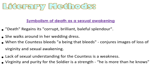The apparent symbolism of death as a sexual awakening has a huge potency across this story. We are forced to confront the hollow nature of what beauty provides for the Countess. She walks around surreally in her mother's wedding dress, looking like the image of purity, even though she is cast out from that sense of purity by her actions. 'Death regains its corrupt, brilliant, baleful splendour for her.' When the Countess bleeds, it conjures up images of loss of virginity and sexual awakening. But the lack of sexual understanding for the Countess is a weakness, while virginity and purity for the soldier is a total strength.